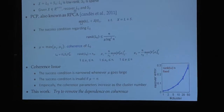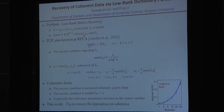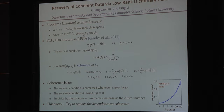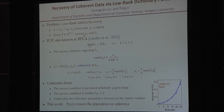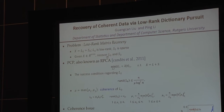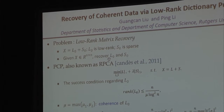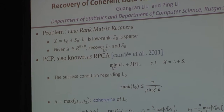The next speaker is Goan Can Lu, who is going to talk about recovery of coherent data via low-rank dictionary pursuit. In this work, we study the problem of low-rank matrix recovery: given a data matrix X generated by L0 plus S0, we want to recover both L0 and S0, where L0 is assumed to be low rank and S0 is assumed to be sparse. To solve this problem, a preferred method is RPCA by Candes et al. Under certain conditions, RPCA can exactly recover both L0 and S0.